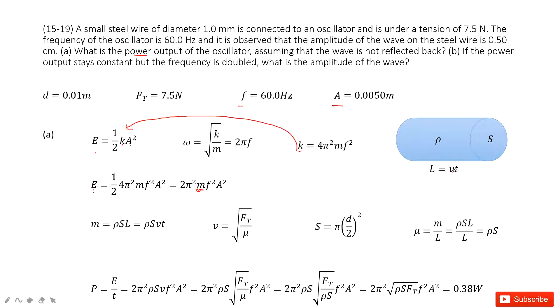And L can be written as VT. This V is the wave speed times the T, how much time it traveled. So now we can see.